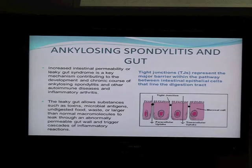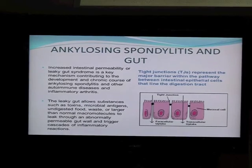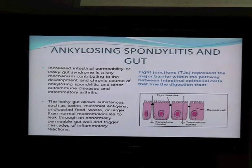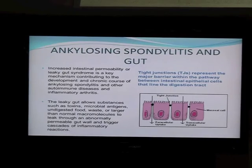This includes toxins, microbial antigens, food particles, microbial waste, various macromolecules, and so on. What happens then is a typical immunization scenario — all these large molecules can trigger inflammatory responses. This is not a mechanism unique to spondylitis; the same thing has been described for rheumatoid arthritis, lupus, and Sjögren's syndrome. This is the entry scenario and the beginning of the pathological process.